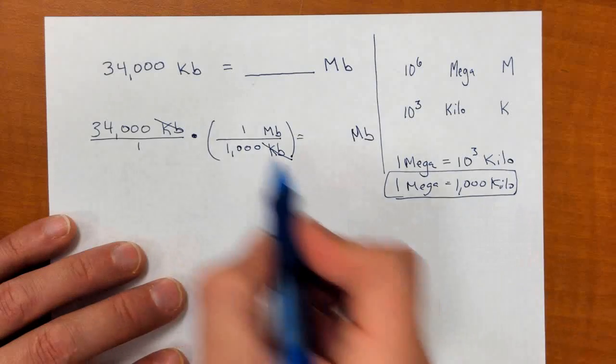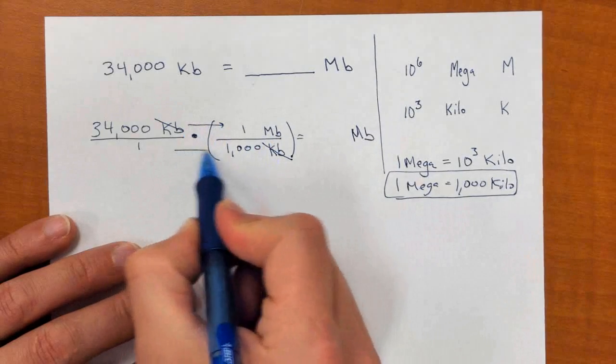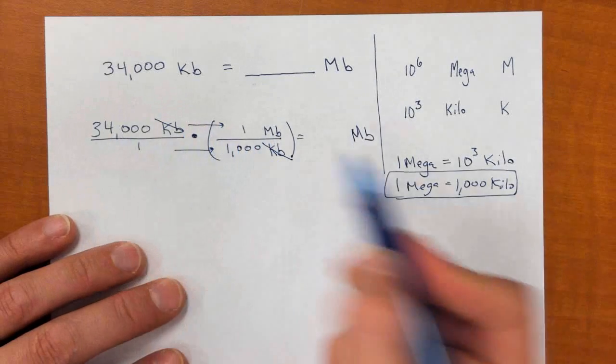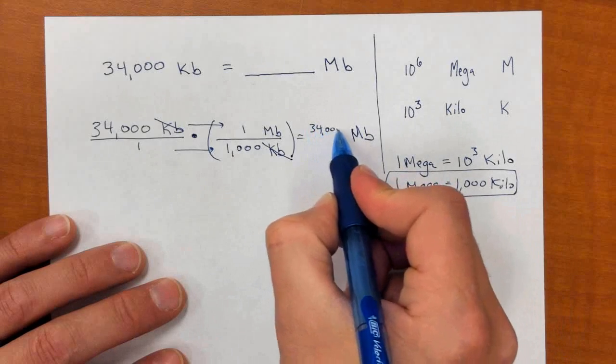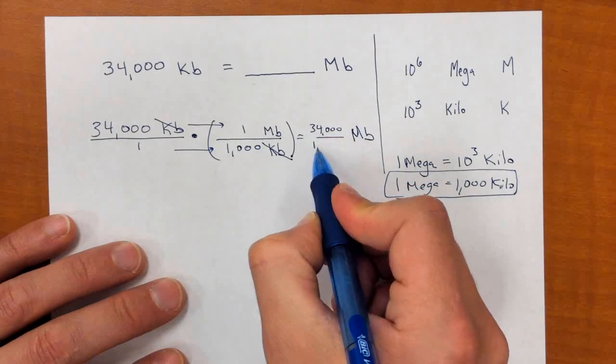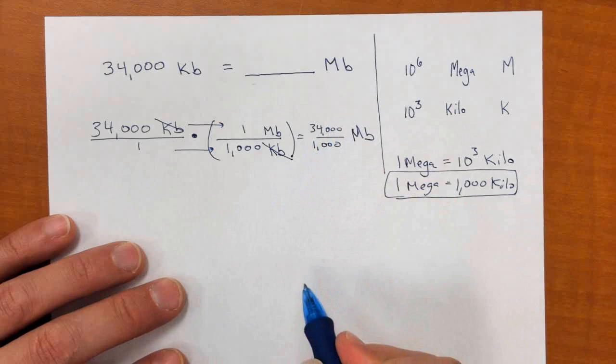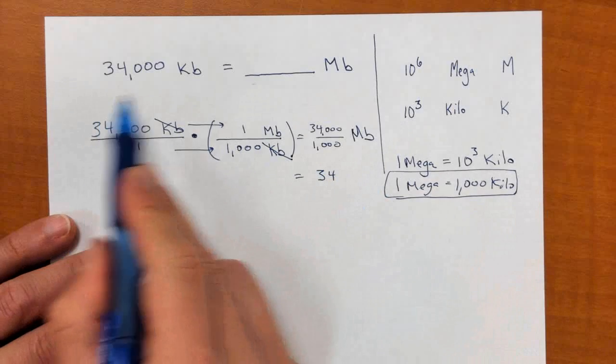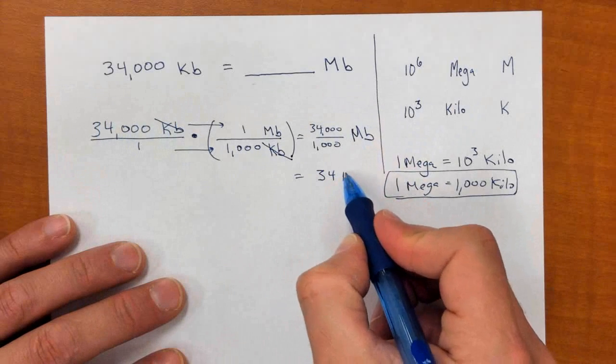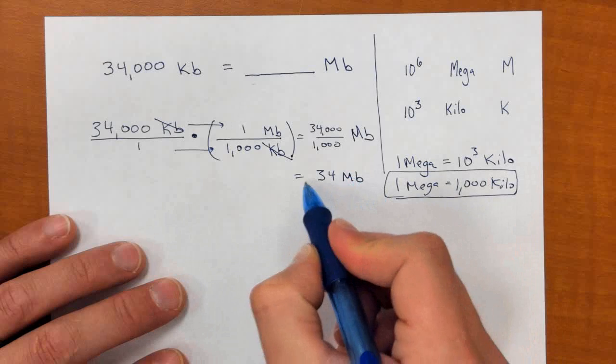And now we just multiply straight across and reduce. Thirty-four thousand times one is thirty-four thousand. I'll go ahead and write it. One times a thousand is a thousand. Now divide. Thirty-four thousand divided by one thousand is thirty-four. So thirty-four thousand kilobytes is thirty-four megabytes.